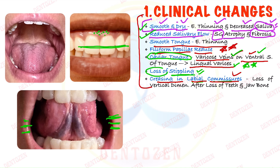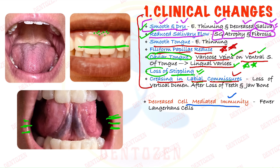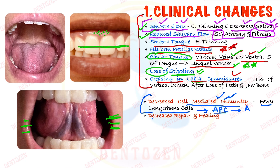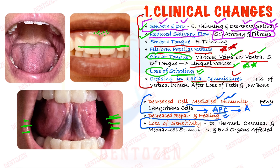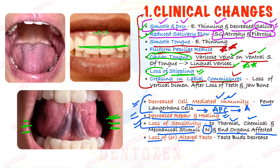There are also functional changes occurring within the mucosa. There is decreased cell-mediated immunity because fewer Langerhans cells — the normal antigen-presenting cells in oral mucosa that capture antigens — are present, leading to decreased immunity and more chances of infection. There is also decreased repair and healing capacity of the mucosa with age, as well as loss of sensitivity to thermal, chemical, and mechanical stimuli due to changes in nerves and sensory organs.